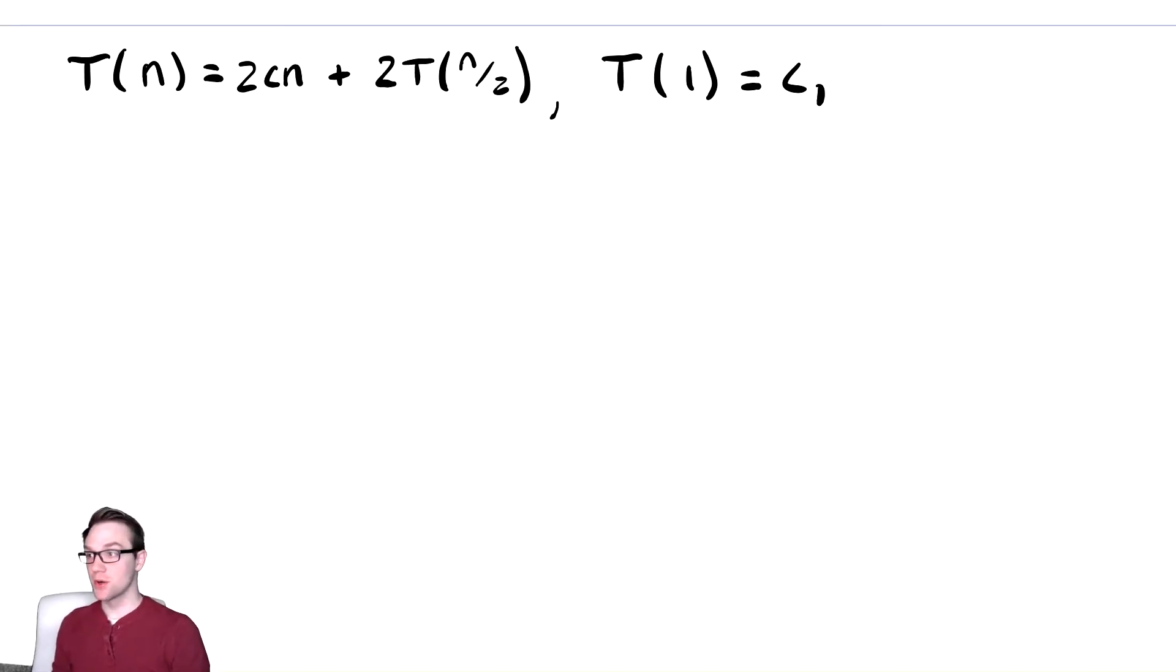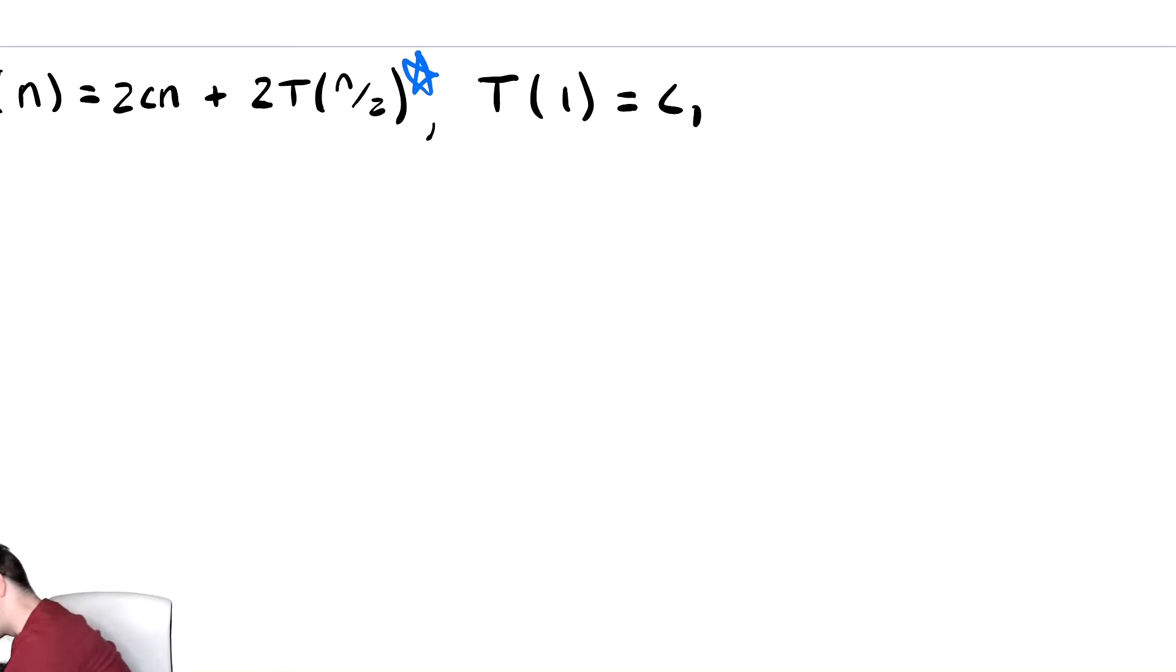Having built our recurrence relation for merge sort, we now need to analyze it. We're going to do exactly what we've done before. We'll label this first equation as star, and off to the side in a different color, we're going to plug whatever's inside of T on the right-hand side, n over 2, into star.